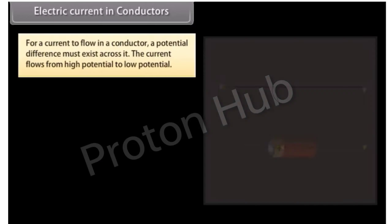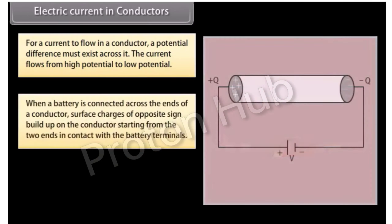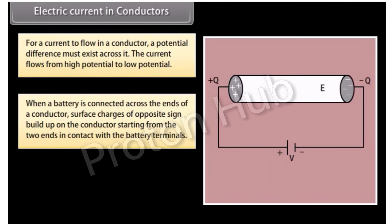For a current to flow in a conductor, a potential difference must exist across it. The current flows from high potential to low potential. When a battery is connected across the ends of a conductor, the surface charges of opposite sign build up on the conductor, starting from the two ends in contact with the battery terminals.